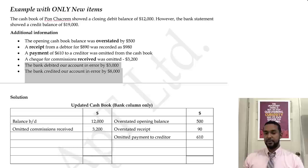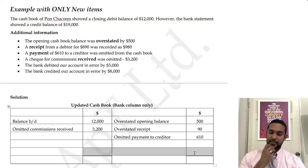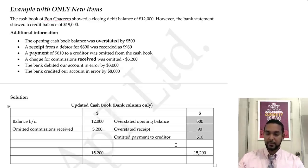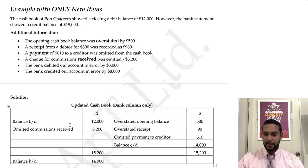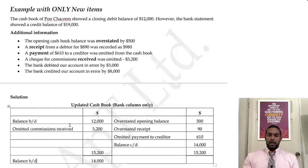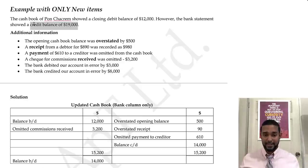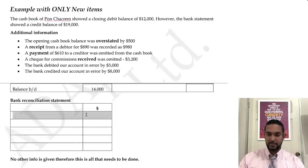The other two items — bank debited or credited our account in error — are bank statement errors, so we'll fix those in the bank rec. Looking at the column totals, the debit side is larger. We use that total on both sides and find the balance, which gives us the adjusted cash book balance. It still doesn't match the $19,000 because we have two items that are bank statement errors, so we need to do a bank reconciliation statement.